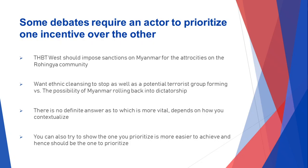Some debates require an actor to prioritize one incentive over another. For example, with the motion that the West should impose sanctions on Myanmar for atrocities on the Rohingya community: as the West, you must highlight that you're against genocide or ethnic cleansing and must maintain human rights and stability. But you also understand that Myanmar being a democracy is particularly important. This motion was discussed before the military took over again — so you know that if you put sanctions on Myanmar, there's a good chance the military comes back into power and they become allies with China once again.